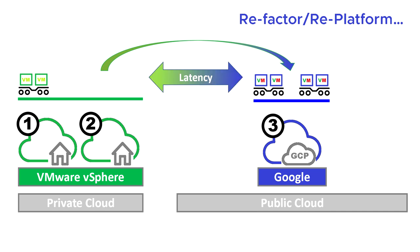There are some difficulties with that when we do a refactor or a replatform. The first one is latency. We've never really had to consider latency before when everything is in the same server room, the same rack, or the same switch. But now things that happen in milliseconds or microseconds are having to travel across the public internet to a cloud provider and back again. Latency can kill an application or stop it from working. If it doesn't kill it, it might still affect performance — the application might work, but users may notice a significant difference.